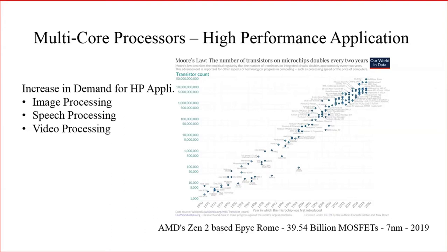Since we have seen the single-core processor, there is a performance limitation for it. Even though we are increasing the number of transistors in a single-core processor, when it reaches a particular point, performance cannot be increased further. That is why we are trying to migrate from single-core processor to multi-core processor.